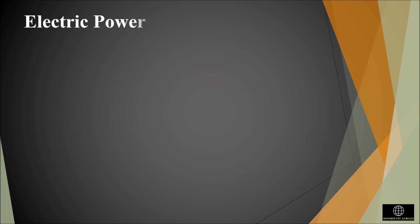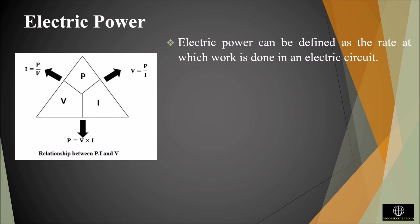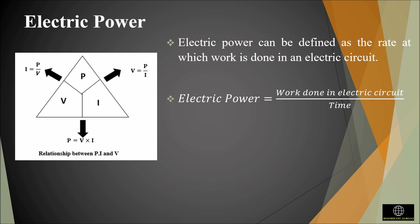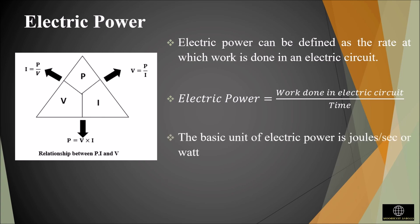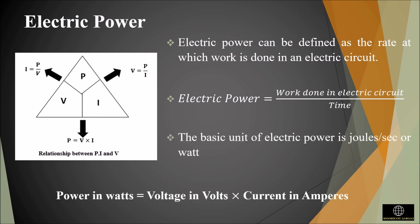Now let's define electric power. Electric power can be defined as the rate at which work is done in an electric circuit. Electric power is equal to work done in the electric circuit divided by time. When voltage is applied to a circuit, the current flows through it, so work is done in moving the electrons in the circuit. The work done in moving electrons in a unit of time is called electric power. The basic unit of electric power is joules per second, or watt. We can say that one watt of power is consumed if a voltage of one volt causes one ampere of current to flow through it.